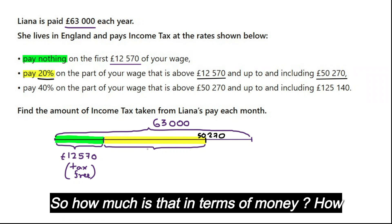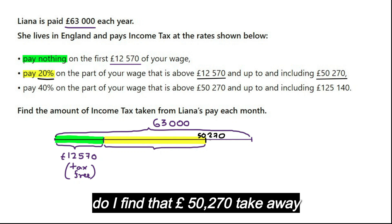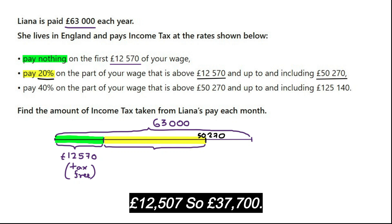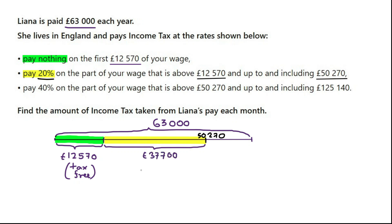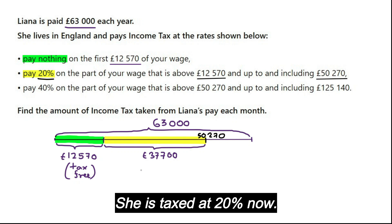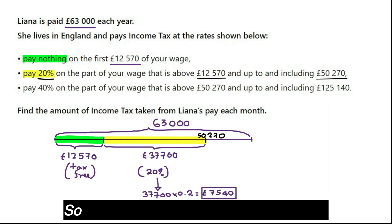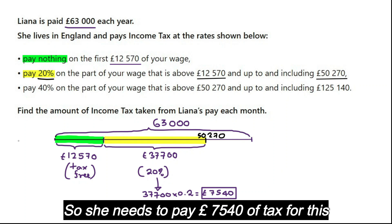To find how much the 20% band is in money: £50,270 take away £12,570 gives £37,700. She is taxed at 20% on that amount. Multiplying by 0.2, she needs to pay £7,540 in tax for this yellow part.